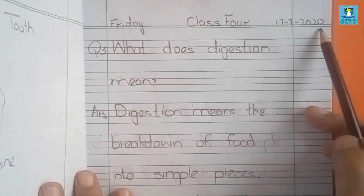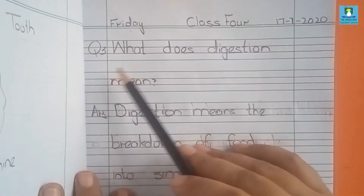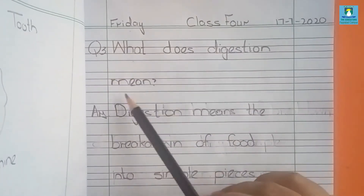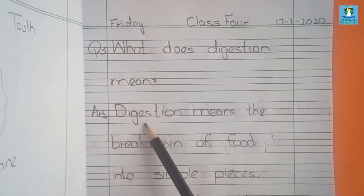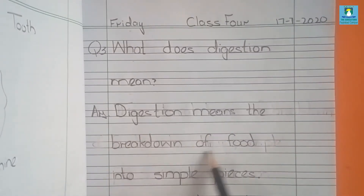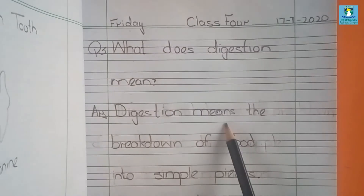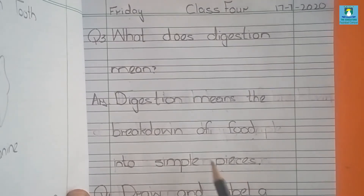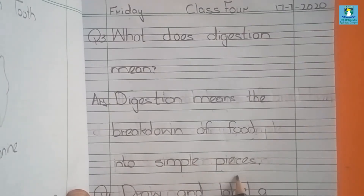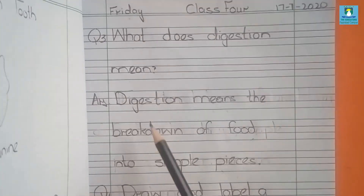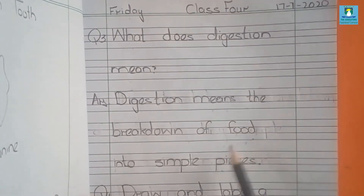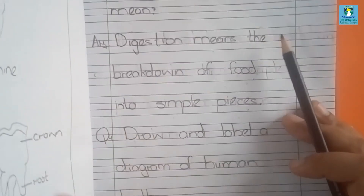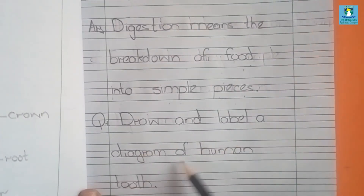Date is 17 July 2020. Question number 3: What does digestion mean? Answer: Digestion means the breakdown of food into simple pieces.